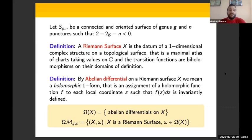For any fixed Riemann surface X, we define Ω(X), the vector space of abelian differentials over the Riemann surface, whereas Ω_{g,n} will denote a much bigger space as the set of all possible couples (X, ω), where X is a Riemann surface and ω is an abelian differential.